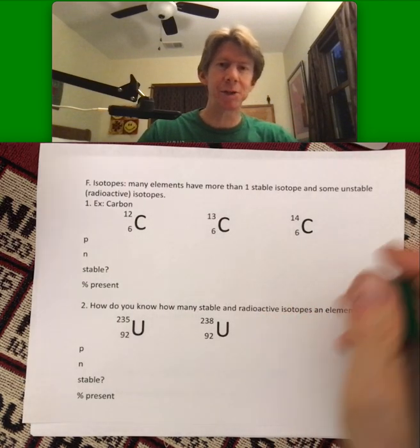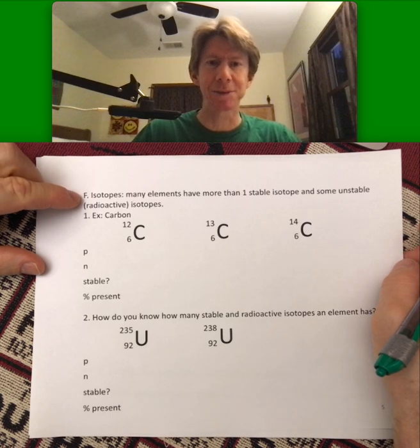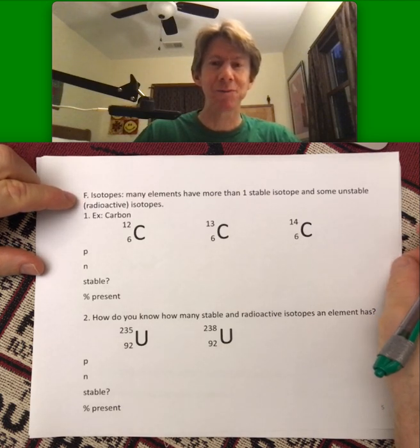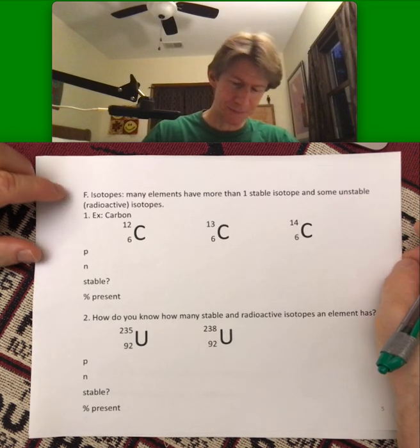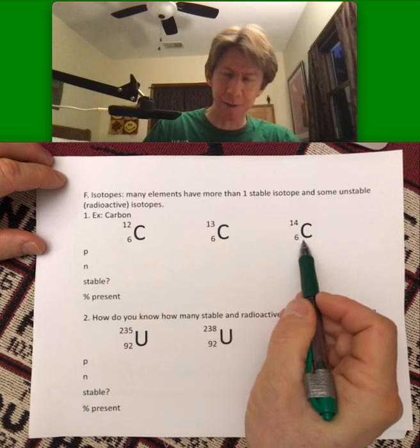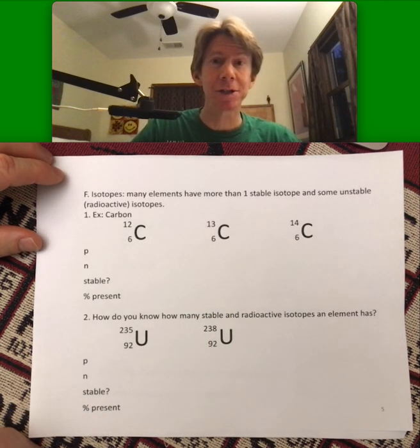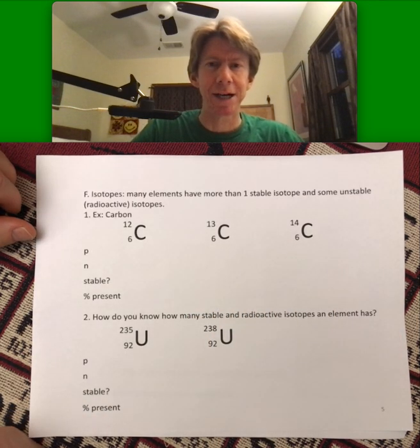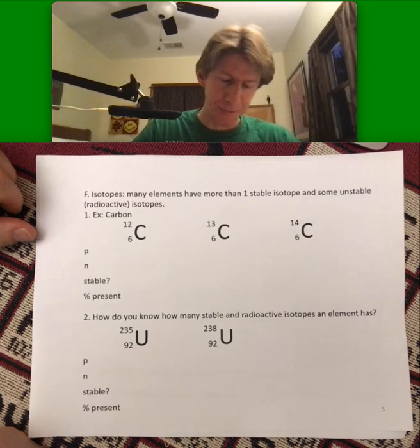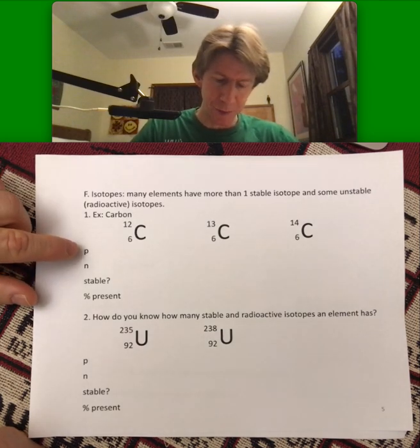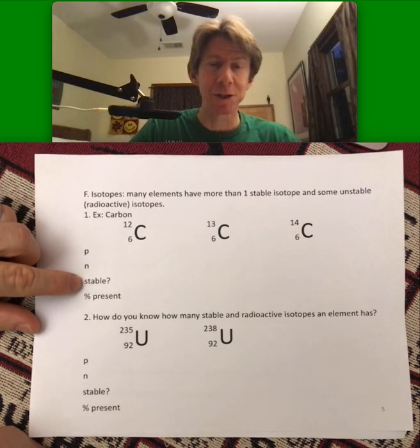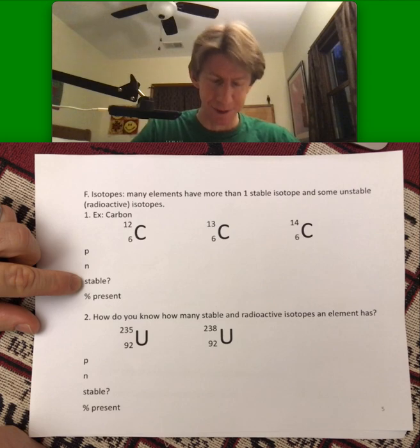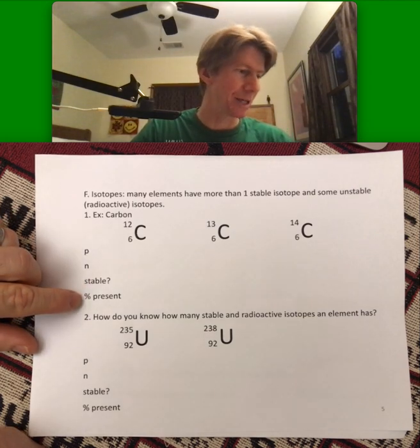Now we'll continue our focus on the nucleus by talking about isotopes. Many elements have more than one stable isotope and some unstable or radioactive isotopes. And what I'm showing here are, for carbon, the three nuclear symbols for the isotopes of carbon. And we can go through and P is protons, neutrons. I will tell you which ones are stable or radioactive. And then we'll talk about the percent present as well.